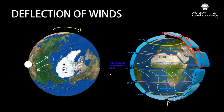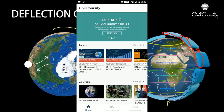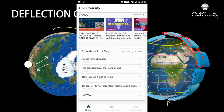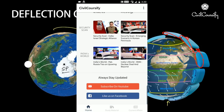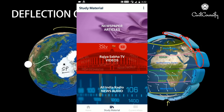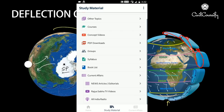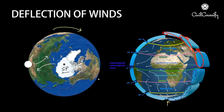I hope you've now understood the concept of the Coriolis effect and the entire phenomenon is clear. All topics are very easy — we ourselves make them difficult to understand. Keep struggling, keep learning, and don't give up. If you have any doubts, ask in the comment section and we'll be happy to help. You can also download the Civil Coursify Android app from the Google Play Store, where you'll find loads of content, videos, topics, and courses to help you learn and understand concepts better.